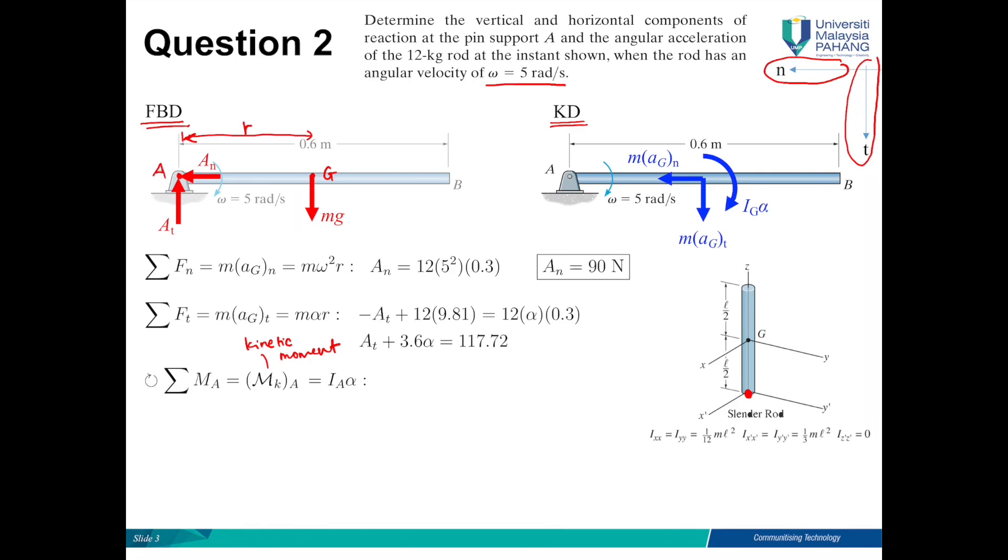This is basically IX prime X prime or IY prime Y prime, and the formula is 1 over 3 ML squared. So we will have IA is equal to 1.44 kg meter squared.